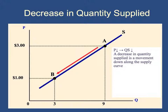When there is a decrease in price, the quantity supplied is going to decrease as well, and you're going to have a movement along the supply curve.